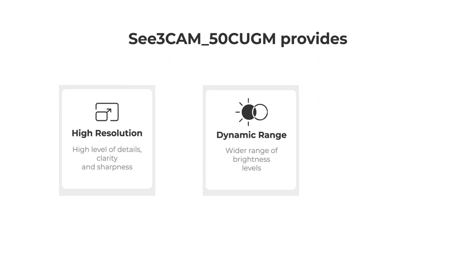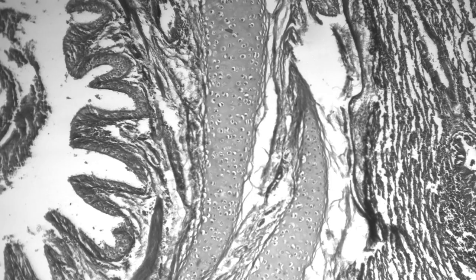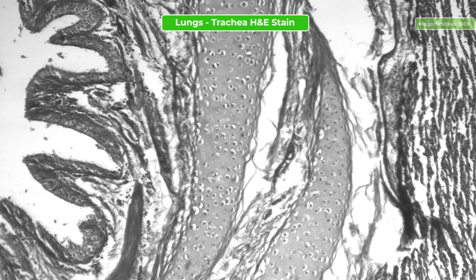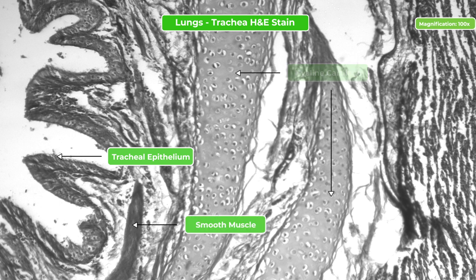Another use case is a microscopic specimen of a cross-section of the lung's trachea, stained with H&E dyes and imaged at 100X magnification.